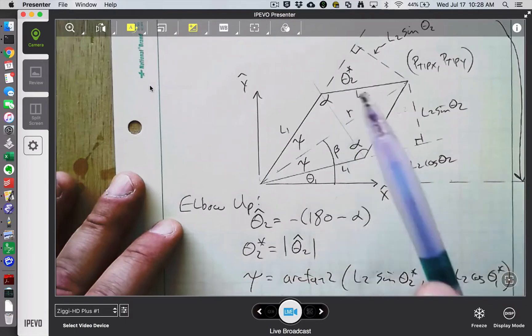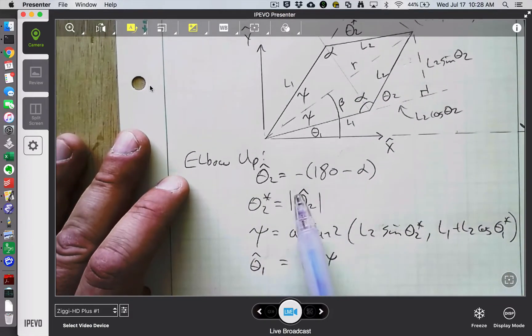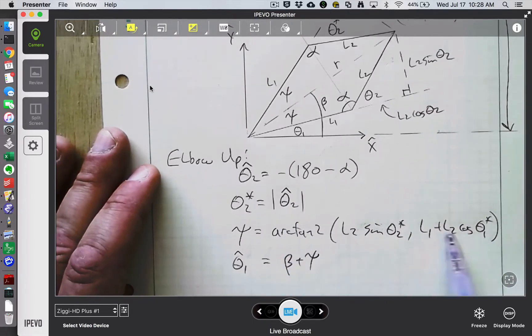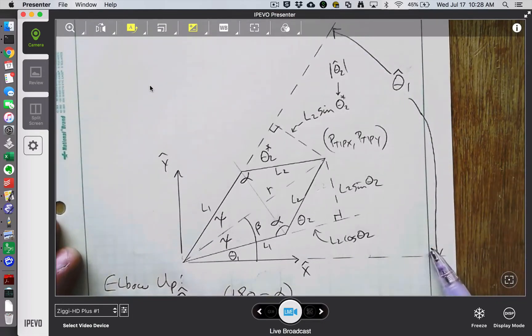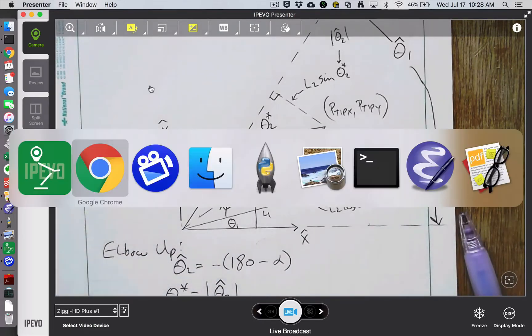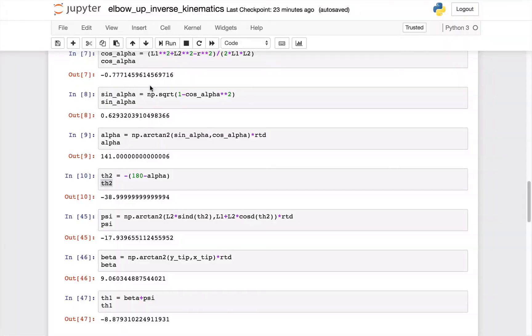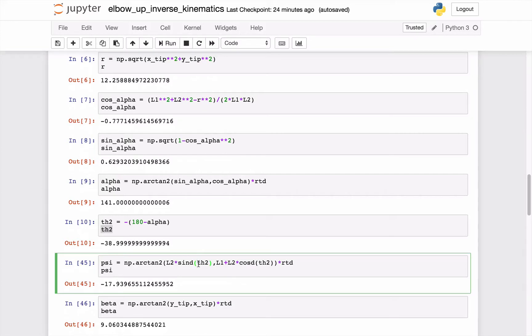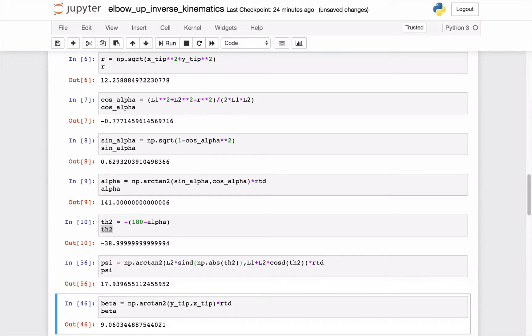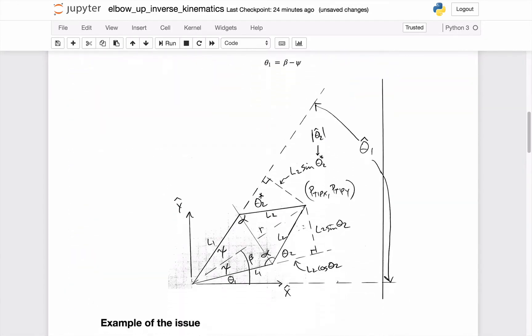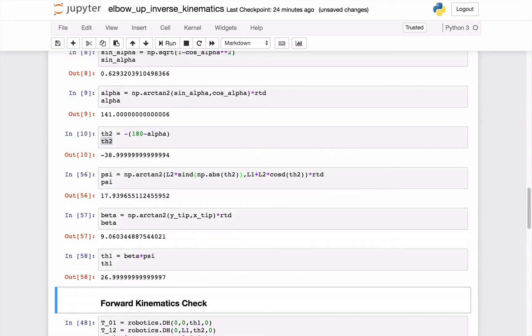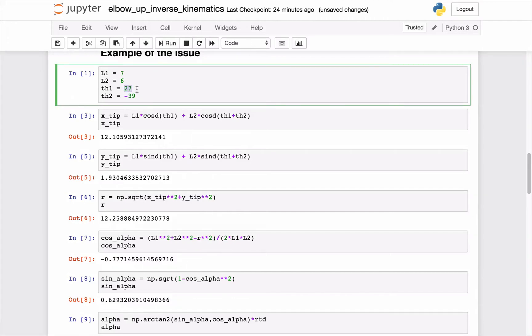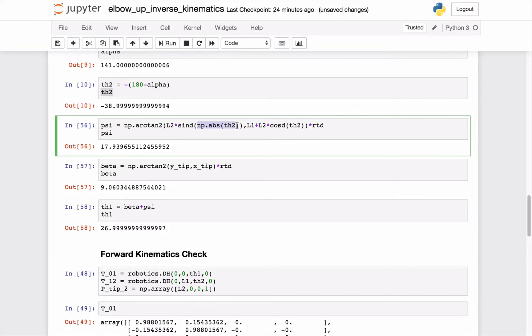But when I go to calculate psi, I need to treat this angle as if it were positive. And so I'm going to define a theta-2 star that's the absolute value of my actual theta-2. And when I plug that into my arctan-2 equation, I'll get a positive value for psi, and I'll get a correct value for the theta-1 hat. So theta-1 hat and theta-2 hat are the elbow-up solutions. So from a Python standpoint, all that's really necessary is to go in, and when I calculate psi, I need to put an absolute value on theta-2.